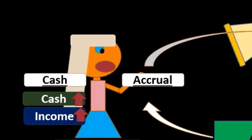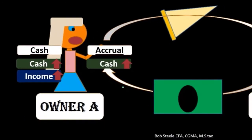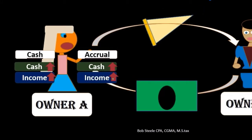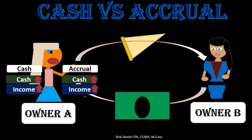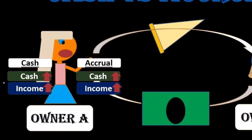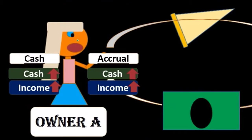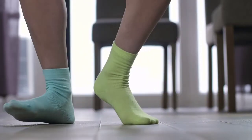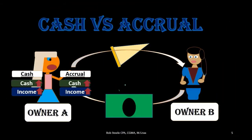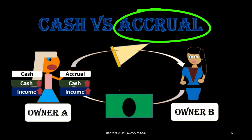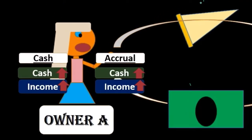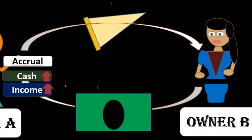On the accrual side, we would have the same transaction — still increasing cash because cash was received, and still increasing revenue. However, the reason is different. Under the accrual method, we're recording revenue because we did the work — because we delivered the pizza. That is the thing driving us to record revenue under the accrual method, not the receipt of cash.